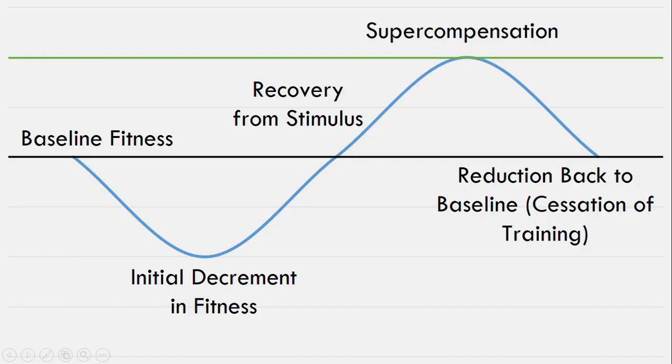The general adaptation syndrome is the most basic form of explaining adaptation to training. On this graph here we have fitness level. We now know that there's more to adaptation than just fitness — there's also fatigue that comes into play. However, this model only takes into consideration fitness.